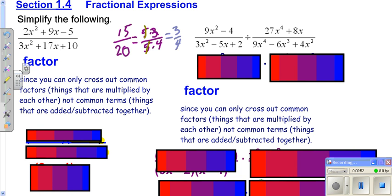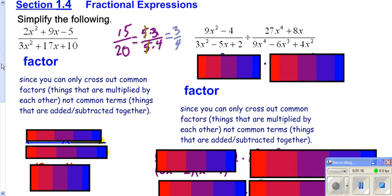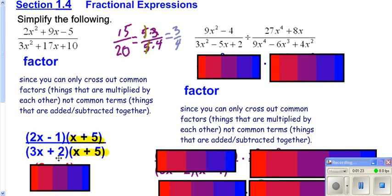We want to use that same approach when we're simplifying fractions here. We cannot just cross out the x-squared and the x-squared because it's not an x-squared times the whole top and an x-squared times the whole bottom. Over here we could cross out our 5s because they were common factors — it was 5 times the whole top and 5 times the whole bottom. So what we need to do is factor the top and factor the bottom, just like we were doing in the last lesson.